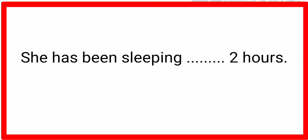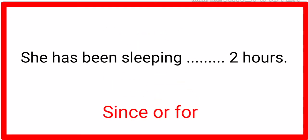'She has been sleeping ___ two hours.' Which one should be used: 'since' or 'for'? Five, four, three, two, one — the correct answer is 'for'. She has been sleeping for two hours. 'For' is used for duration of time.